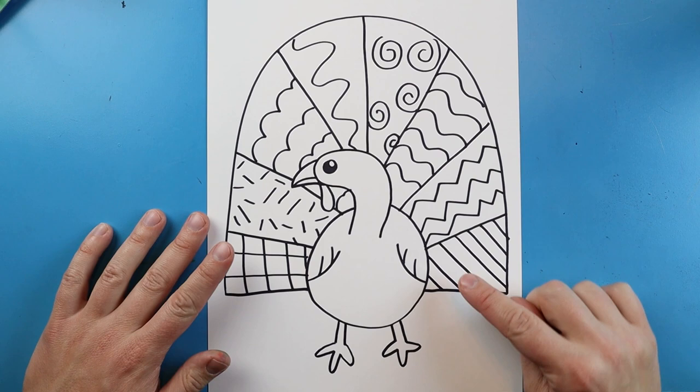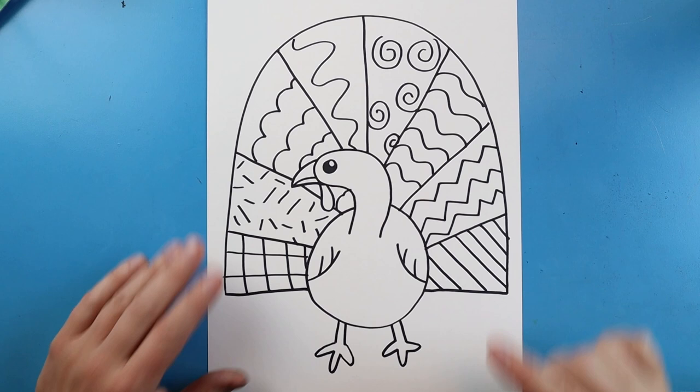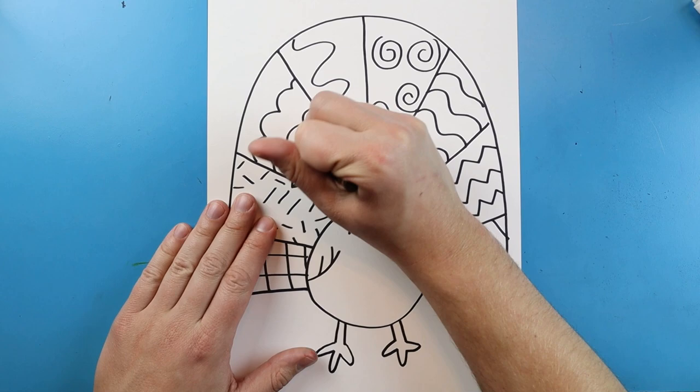Then I want the back of the feathers to really pop, so I'm going to use markers. And instead of just doing like one color in each one, I want to do some patterns. So try to use at least two colors in each one of your little turkey feathers back here. So I'm going to go ahead and fast forward and color this.